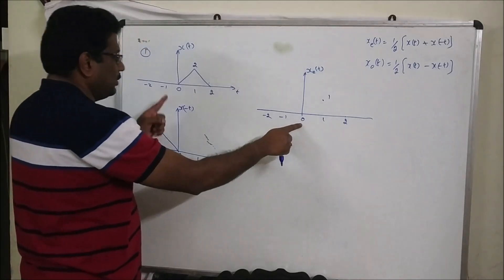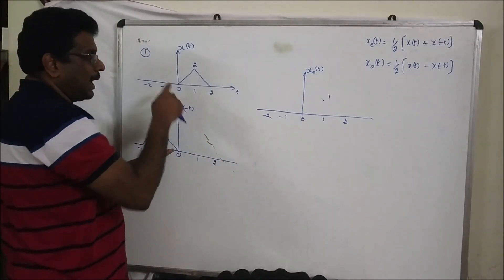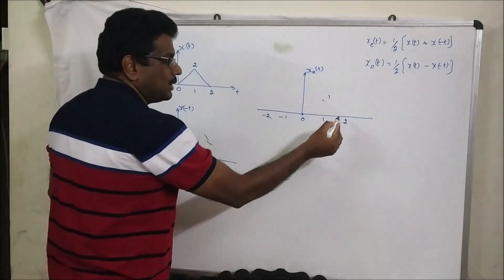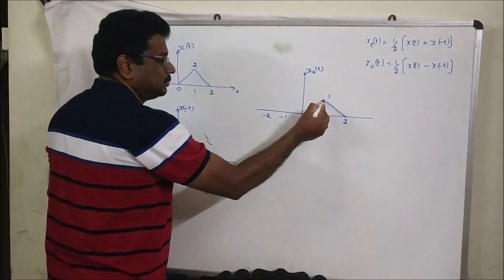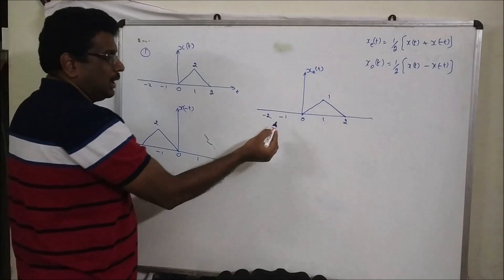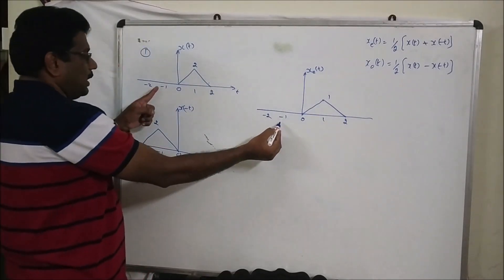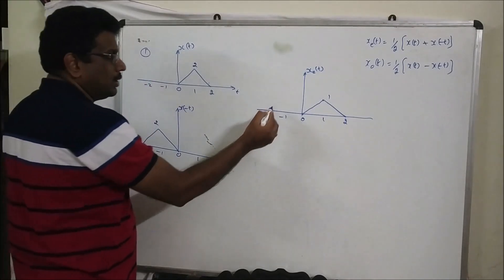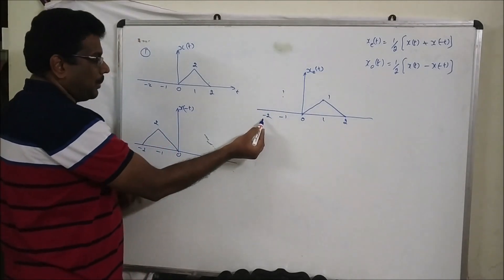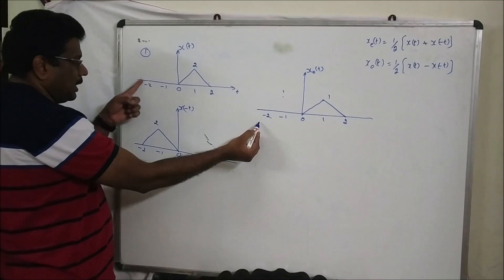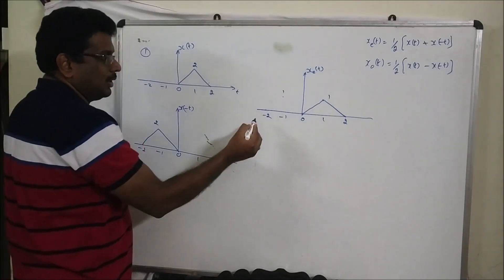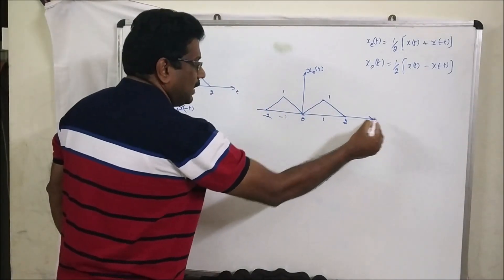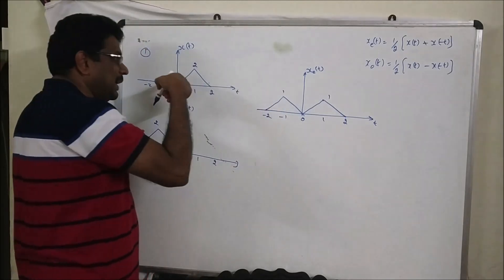At location 0, both signals give 0. 0 plus 0 divided by 2 equals 0. We have some points and we can join them. This is the final answer — the even component of the given problem.